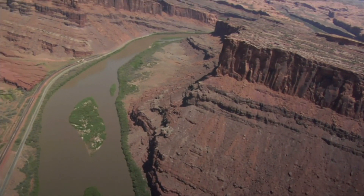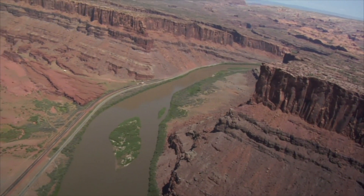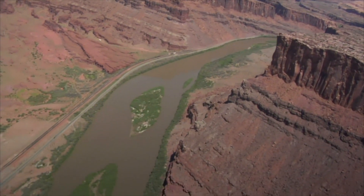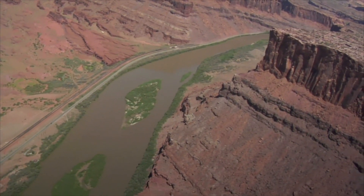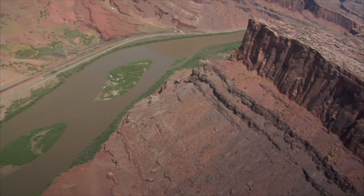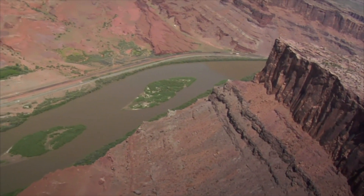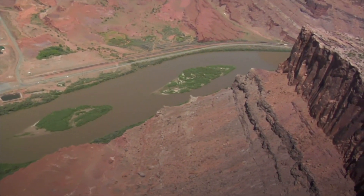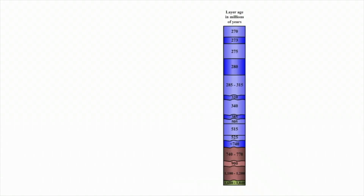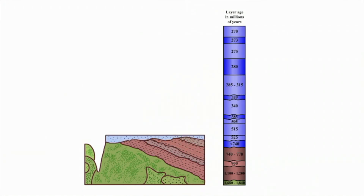If two adjacent layers of rock are missing an interval in geological time, geologists call the surface of contact between them an unconformity. Unconformities are common in sequences of sedimentary rocks where a much younger layer lies directly on top of an older layer. In the Grand Canyon, you can observe that the unconformity exists where a much younger layer lies on one formed much earlier.